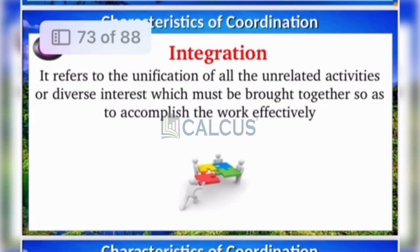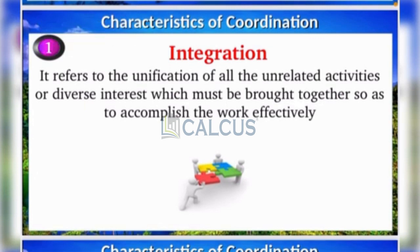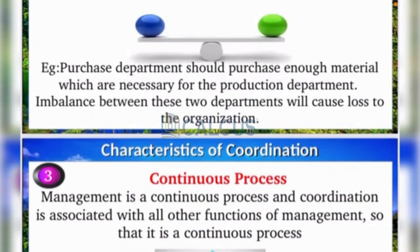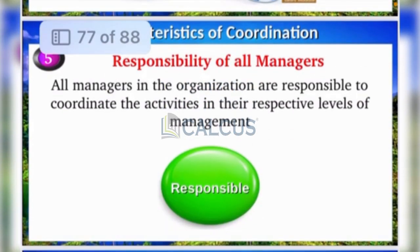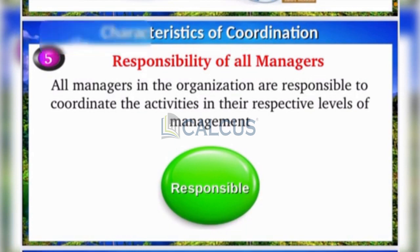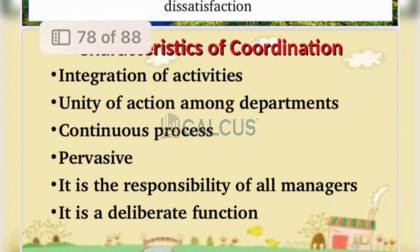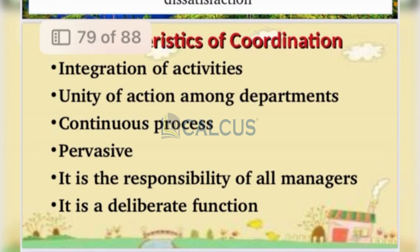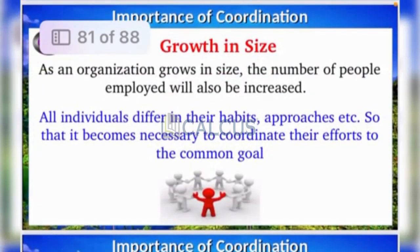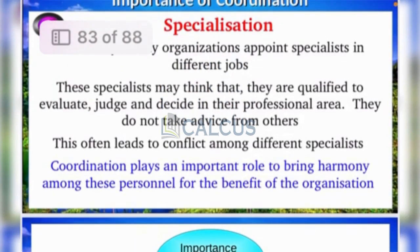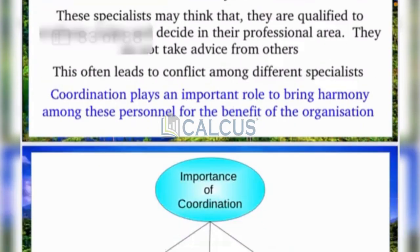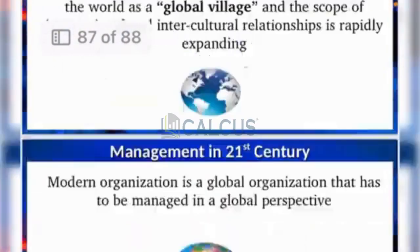Coordination elements include integration and unity of action. Coordination characteristics are: integration, unity of action, continuous process, pervasive — and all managers are responsible. Coordination is also a deliberate function. The importance of coordination grows as the organization's size grows, with functional differentiation and specialization.